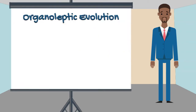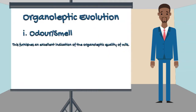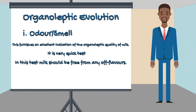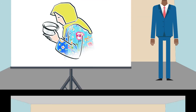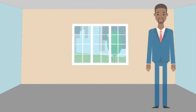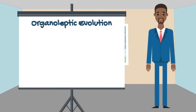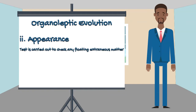Under Organoleptic evaluation: Test 1 is the Smell or Odor test — it is carried out to check any off-flavors present in the milk. Test 2 is the Appearance test — it is performed to check any extraneous matter in the milk.